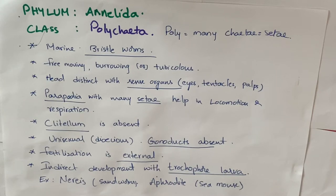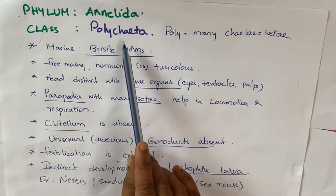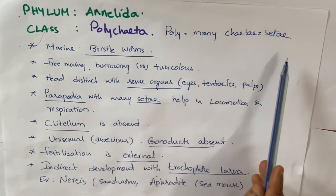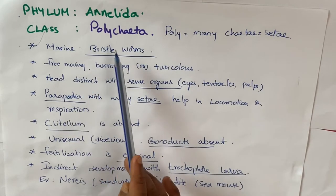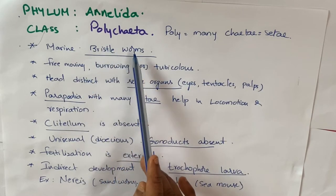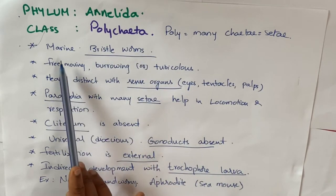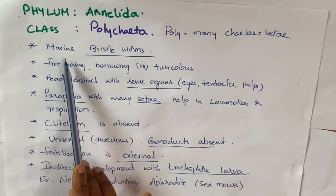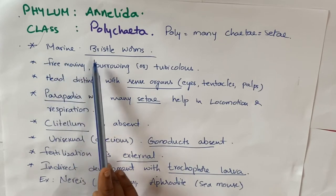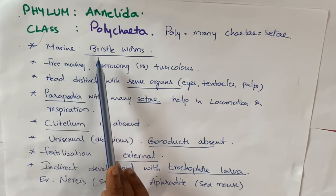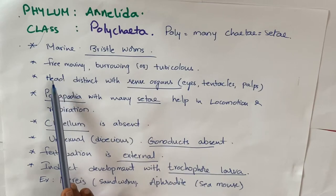Welcome students. Today we learn about Class Polychaeta, Phylum Annelida. 'Poly' means many, 'chaeta' means setae — that's why the name Polychaeta. These animals are mostly marine animals, commonly known as bristle worms.